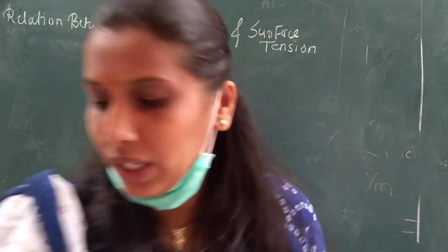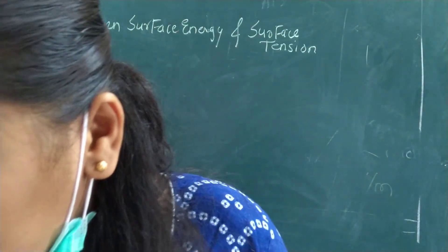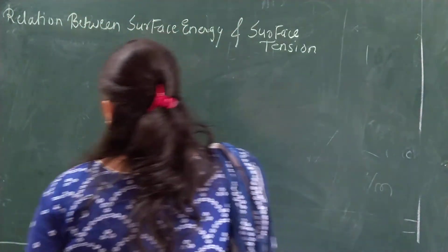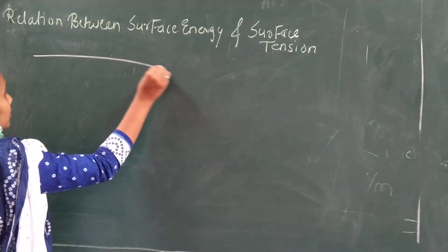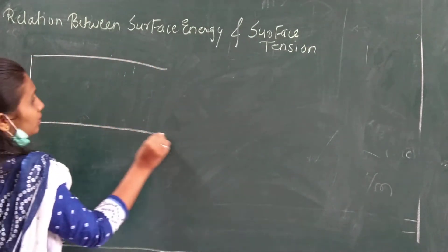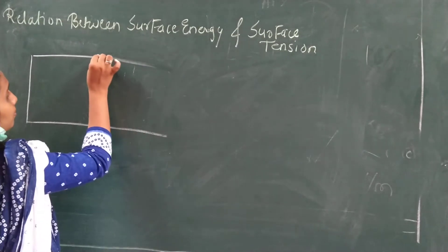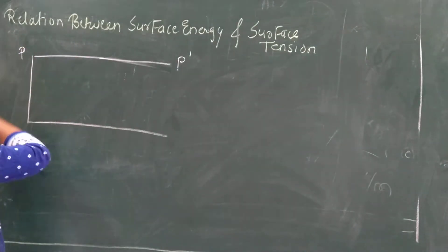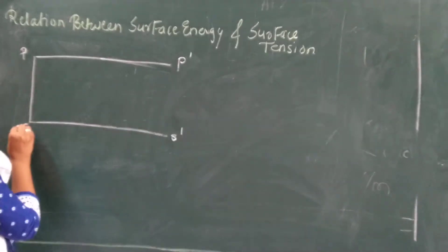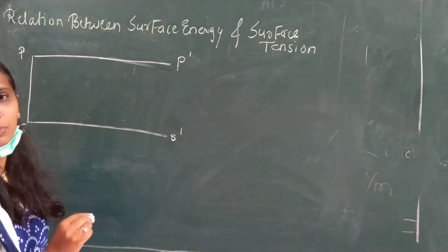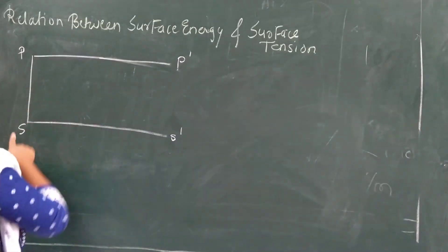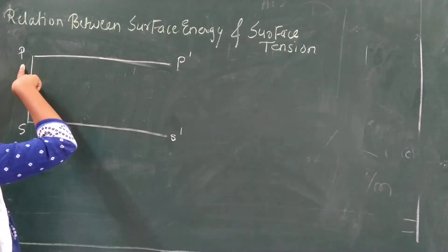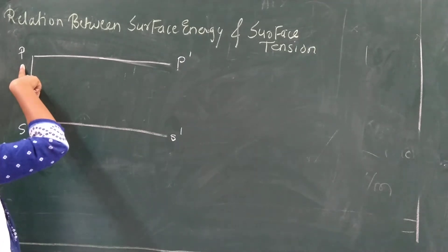Before deriving, let's draw a diagram. Consider a rectangular frame labeled P, Q, R, S according to the textbook. Side TP is fixed and not movable. Side TS is also fixed. Side SS is also fixed. Only the fourth side, side QR, is movable.